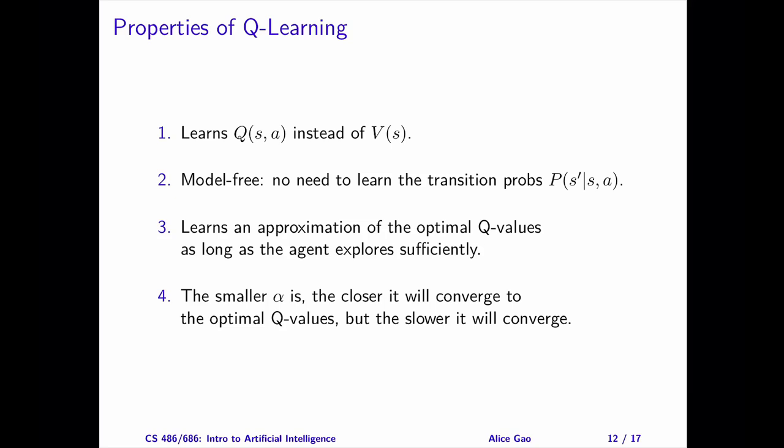Q-learning is not guaranteed to converge to the optimum Q values. However, if the agent explores enough, then Q-learning learns an approximation of the optimum Q values. How good is this approximation? Can we improve it?